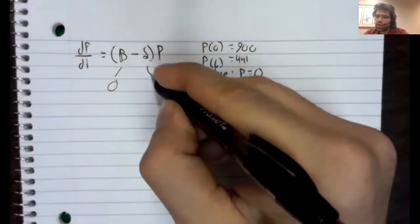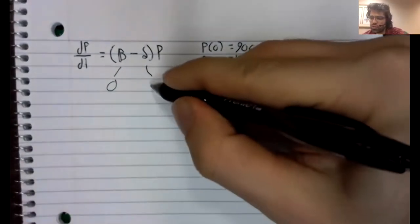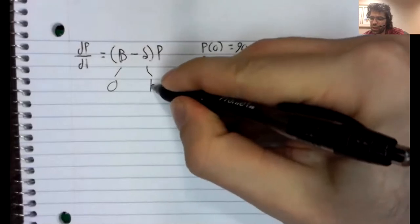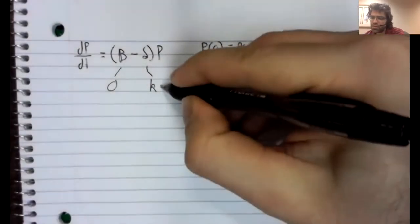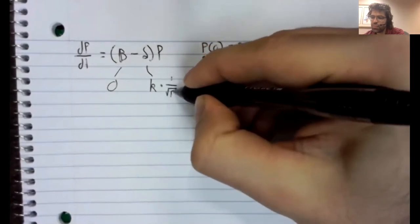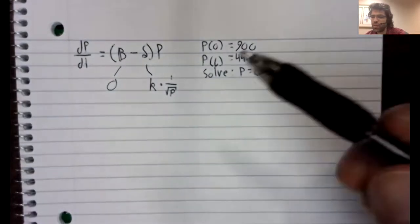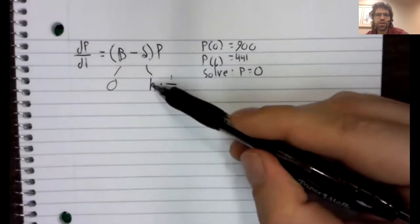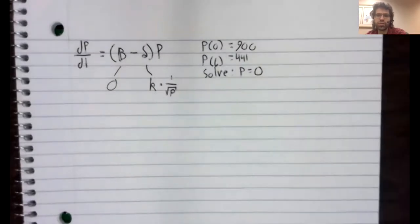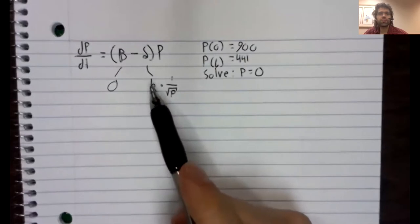And the death rate delta, we're told is proportional to something. And what that means is that it's a constant k times that something. And this constant k is positive. When you see the phrase something is proportional to something else, this constant of proportionality is going to be positive.